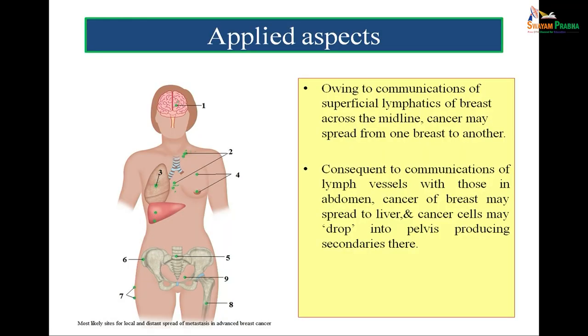What are the sites to which breast cancer can metastasize? There is a venous pathway by which breast cancer can spread to the vertebra and from there to the brain. Breast cancer can spread from one breast to the other via lymphatics, from the breast to the abdomen and liver via superficial lymphatics, or metastatic cells may drop as secondaries producing manifestations in the pelvic region — referred to as Krukenberg's tumor of the ovary. Breast metastasis can also take place to the bones, causing weakening referred to as osteoporosis.